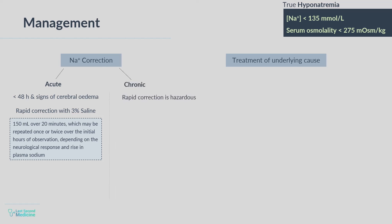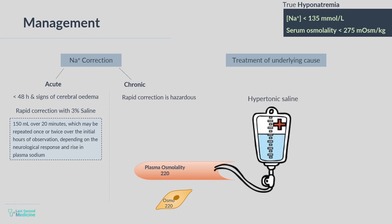On the other hand, rapid correction of chronic hyponatremia can be hazardous. Brain cells have adapted to extracellular hypoosmolality by reducing intracellular osmolality and maintaining normal cell volume. An abrupt increase in extracellular osmolality will not give sufficient time to brain cells to adapt, causing water to shift out of neurons, abruptly reducing their volume and causing them to detach from their myelin sheaths. The resulting myelinolysis can produce permanent structural and functional damage to midbrain structures and is generally fatal. Therefore, the rate of correction in chronic asymptomatic hyponatremia should not exceed 10 millimoles per liter per 24 hours, and an even slower rate is generally safer.